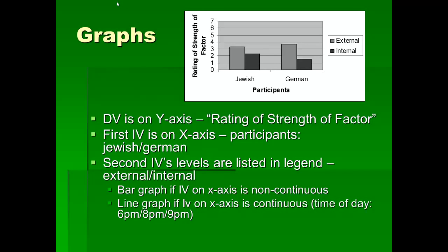A bar graph is used if the IV on the x-axis is non-continuous — that is, different categories, like Jewish versus German. A line graph is used if the IV on the x-axis is continuous, meaning there's no break between levels. For example, if levels are 6 p.m., 8 p.m., and 9 p.m., there is such a thing as 8:30, so that's continuous. When dealing with gender — male and female — that's non-continuous or discontinuous, because there's nothing halfway between male and female.